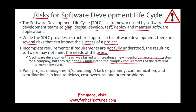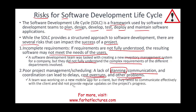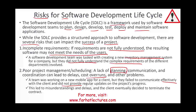Another risk is poor project management or poor project scheduling. A lack of planning, communication, and coordination between team members can lead to delays and cost overruns. For example, a team working on a new mobile app failed to communicate effectively with the client and did not provide regular updates on progress. This can lead to misunderstandings, delays, and the client may eventually decide to terminate the contract.